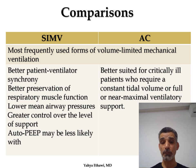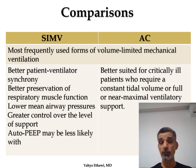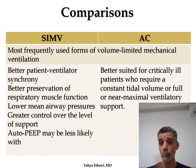With assisted control, the machine helps every breath the patient starts, so it is not ideal for preserving or training respiratory function. However, if you increase the trigger, assisted control can behave like SIMV. The rate provided to the patient in SIMV is only the backup rate, so auto-PEEP is very low — not like assisted control, where if the patient breathes at a very high rate, say 70 breaths/min, all 70 will be supported, leaving no time for full exhalation.